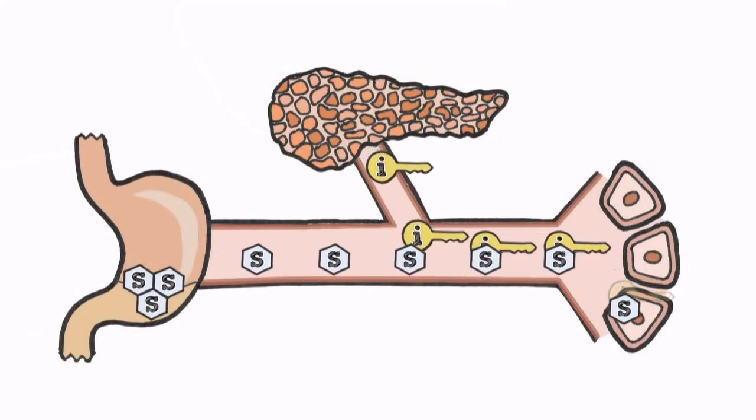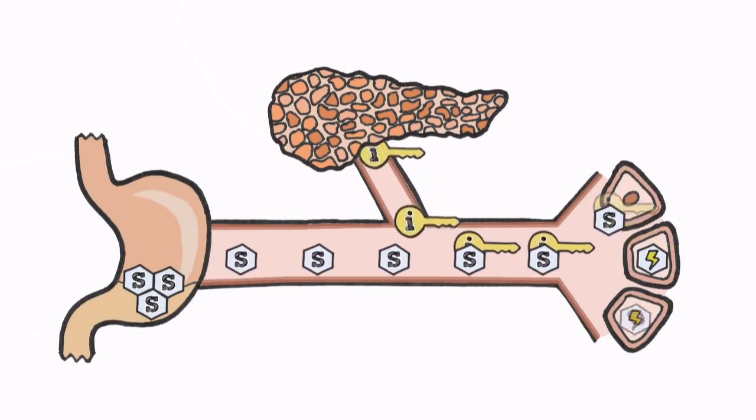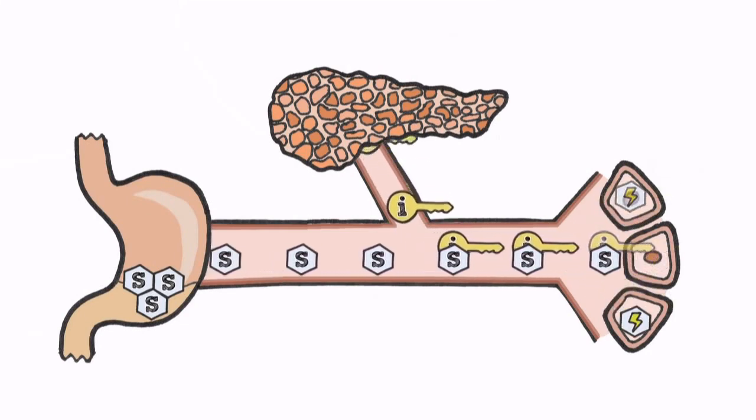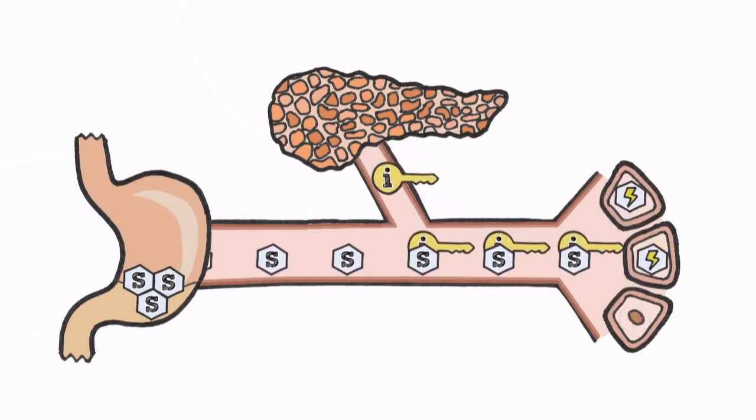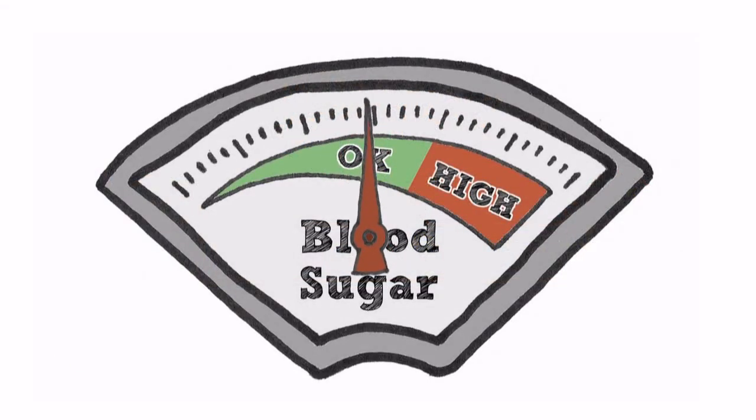The cells then use this sugar as fuel to provide energy for the body. When this process is functioning properly, sugar entering the bloodstream from the stomach is able to exit the bloodstream at the muscle and fat cells. In this manner, the body is able to regulate the concentration of sugar in the bloodstream.